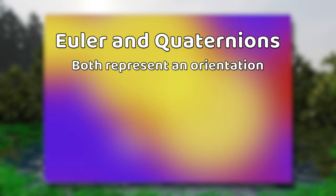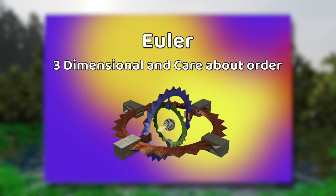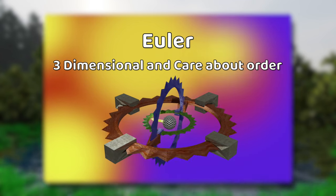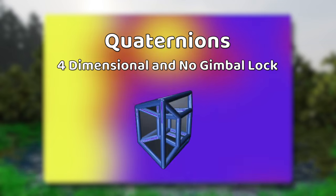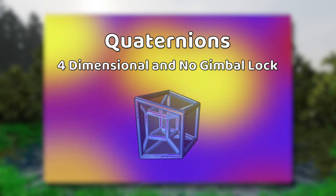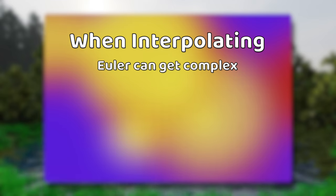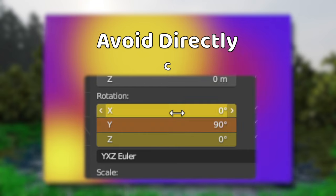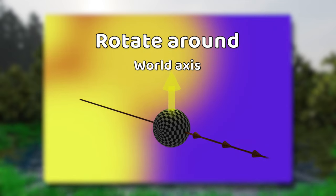Overall, Euler and Quaternion values describe the same thing: orientation. Euler values are 3D and can be much easier to visualize and talk about, but because they are concerned with order and suffer from gimbal lock, they quickly become less easy to see and discuss. On the other hand, Quaternions are 4D and really hard to visualize; however, they are not concerned with order and you won't lose any degrees of rotation. Regardless of what you use, in software like Blender or Unity, you should mostly avoid changing the values directly and instead rotate the object around the world axis and let the values adjust themselves.